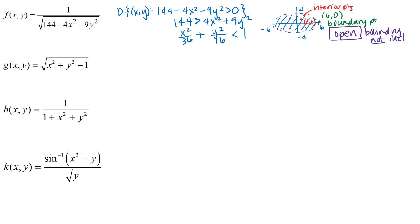For bounded or unbounded, I think about whether distances go off to infinity. Looking at the picture of the region, all points are about 12 units away from each other or less — the farthest points are near either end of the long axis of the ellipse. None of the distances go off to infinity; everything stays finite here. So this is a bounded region. Drawing the graph is especially helpful for thinking about this.